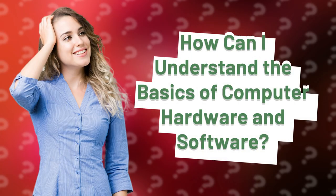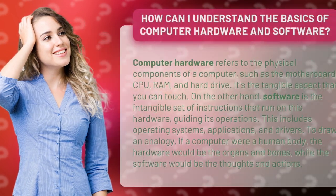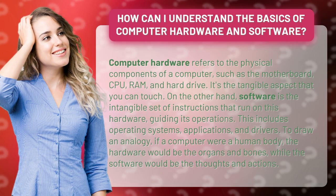How can I understand the basics of computer hardware and software? Computer hardware refers to the physical components of a computer, such as the motherboard, CPU, RAM, and hard drive. It's the tangible aspect that you can touch.